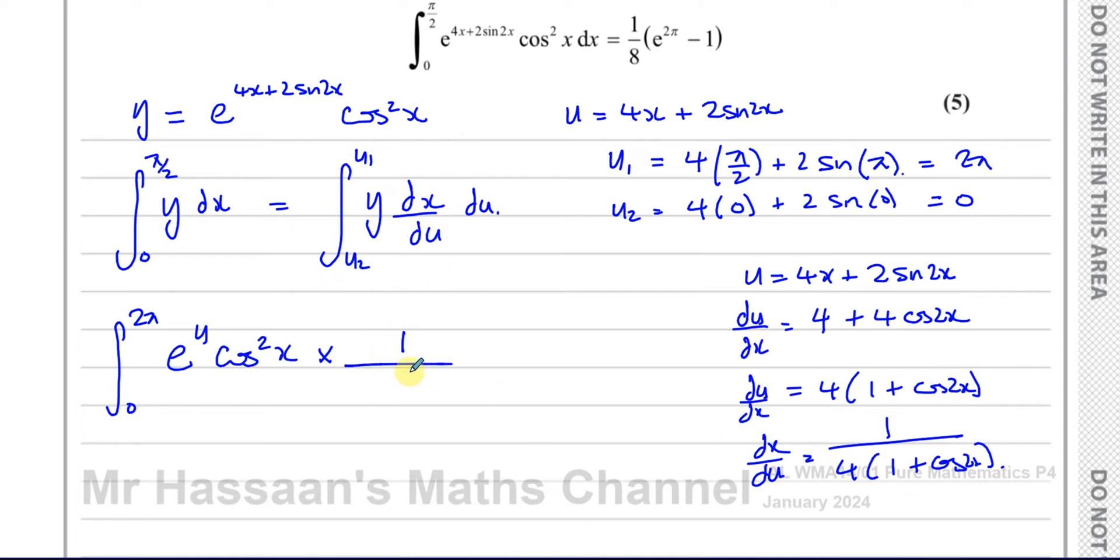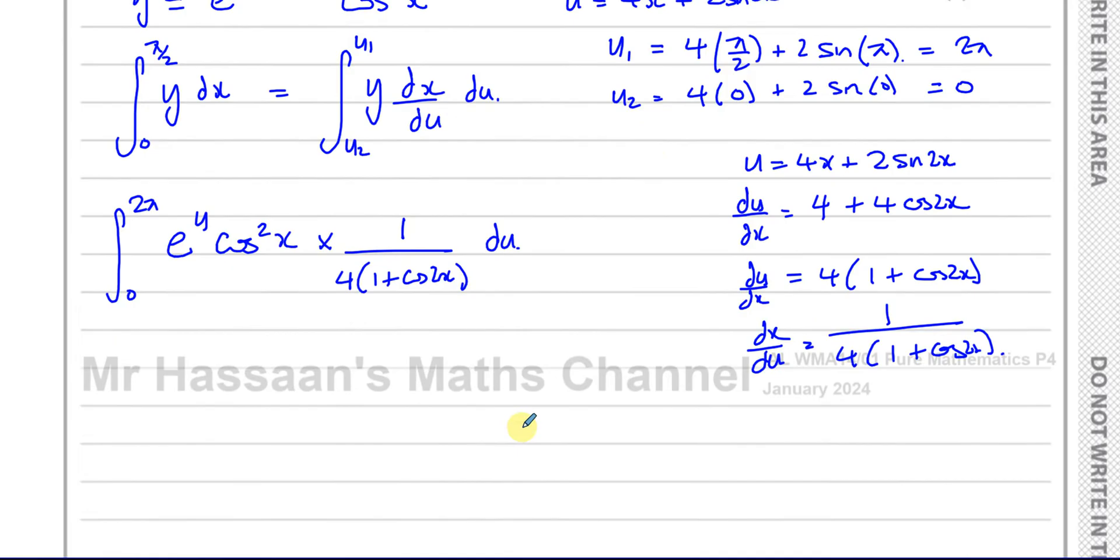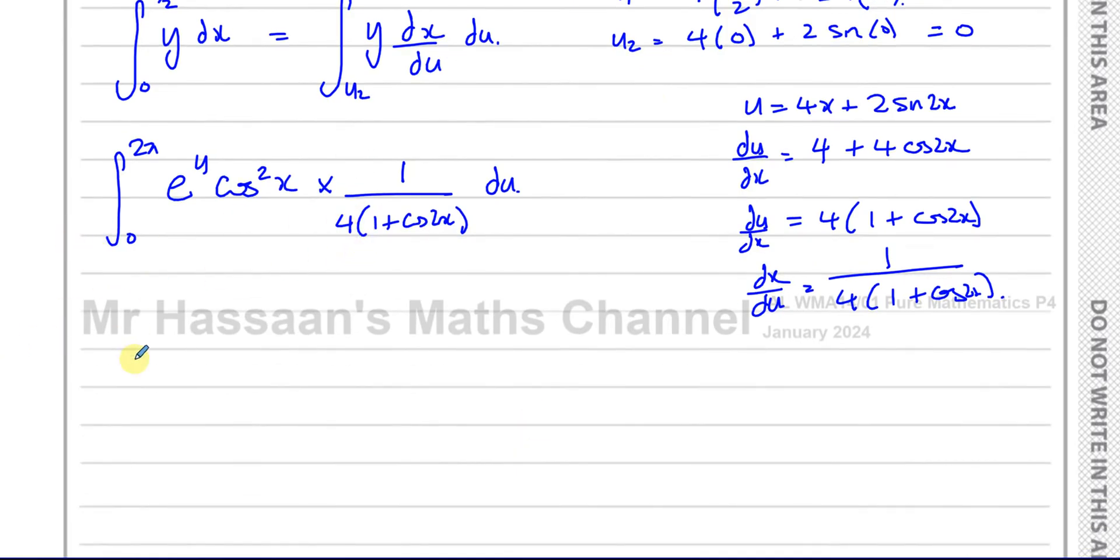I'm going to put times 1 over 4 times 1 plus cosine of 2x. I can't do anything with this until we've changed the x's into u's. What I'm going to do first is I'm going to take out this one quarter.